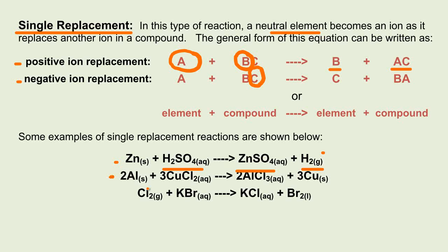Here's another example of a positive ion replacement. And then the equation down here is a negative ion replacement, where you have Cl2. If you take a look at your periodic chart of ions, you'll see that chlorine typically produces negative ions. So you would suspect it would take this compound, replace the bromine, and that's what it does — it forms potassium chloride plus bromine gas.